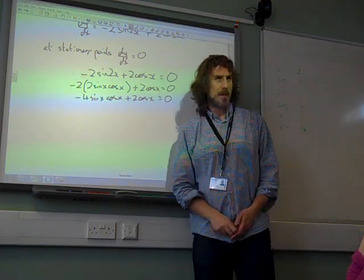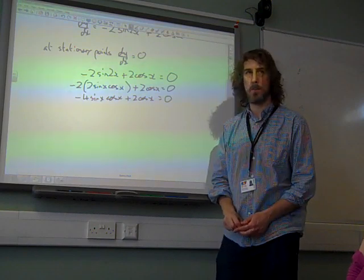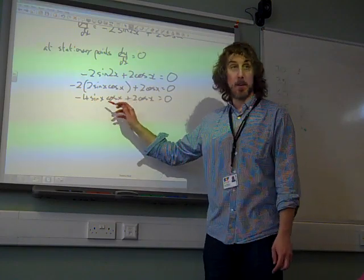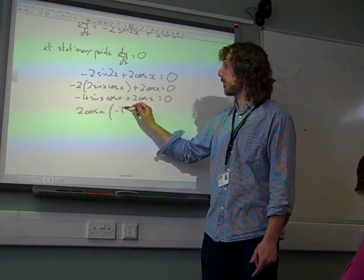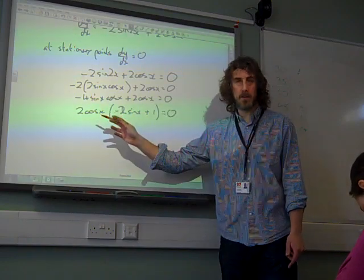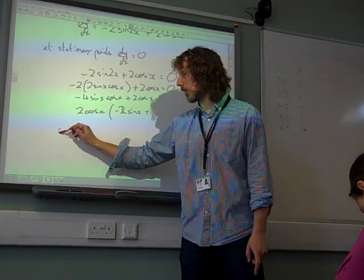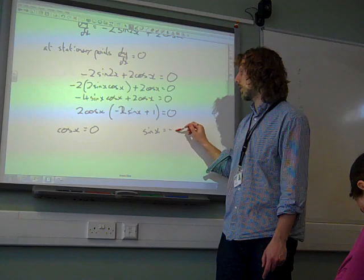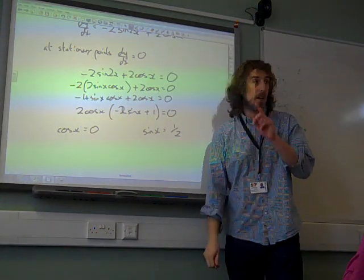Of course, we're really careful that we never divide equations by something that could possibly be equal to 0. So we can divide through by 2 if we want to, but we mustn't divide through by cos x, must we? No. So we take out the common factor of 2 cos x. The remaining is minus 2 sine x plus 1. Two things multiplied together, the answer is 0, so either of them could be 0. So cos x could be 0, and sin x could be plus 1 half.